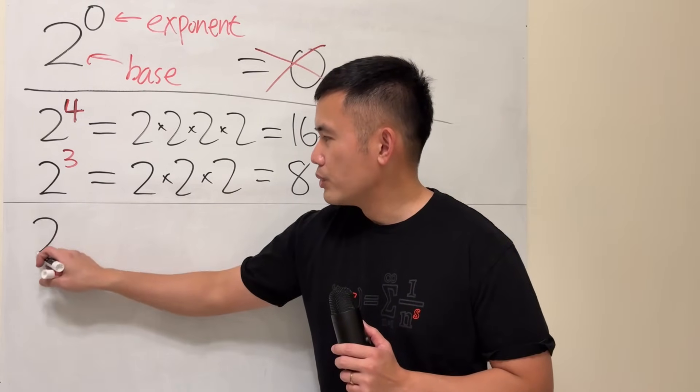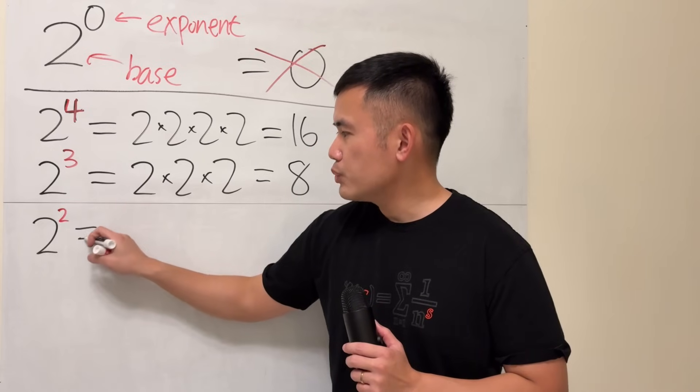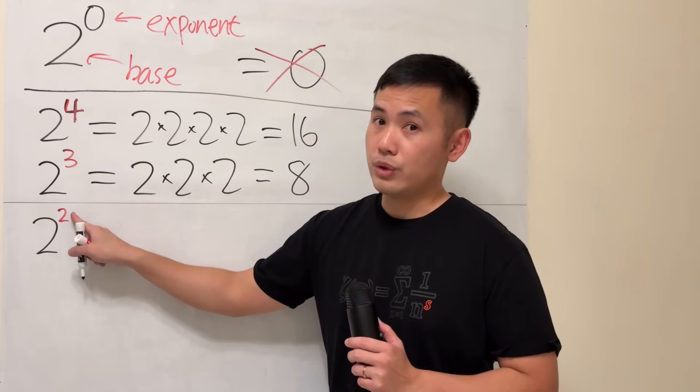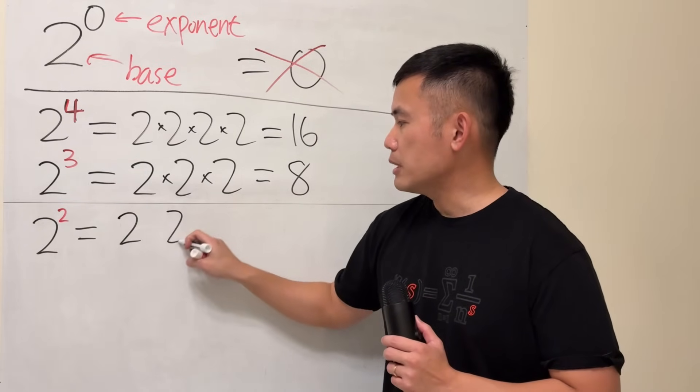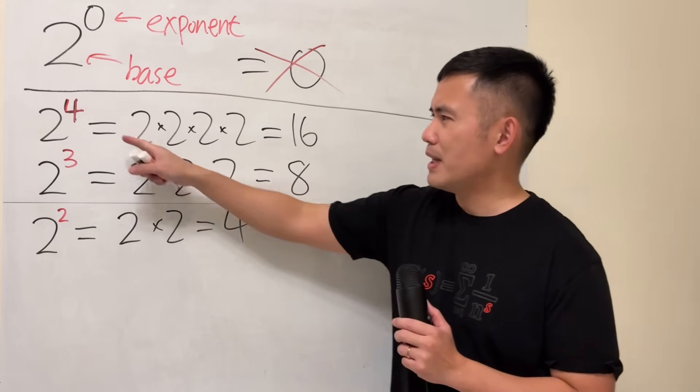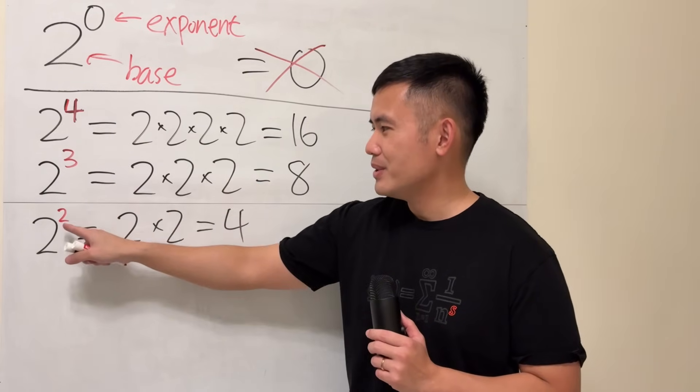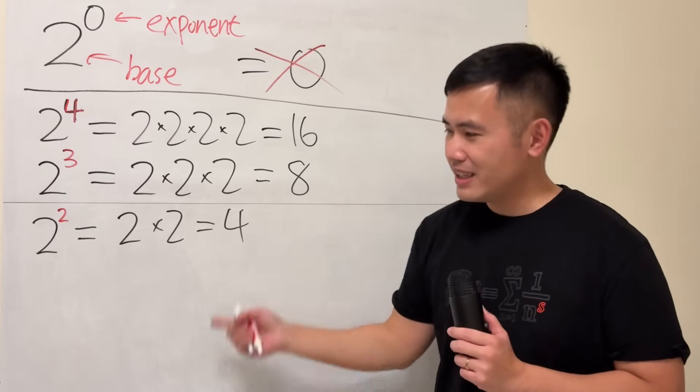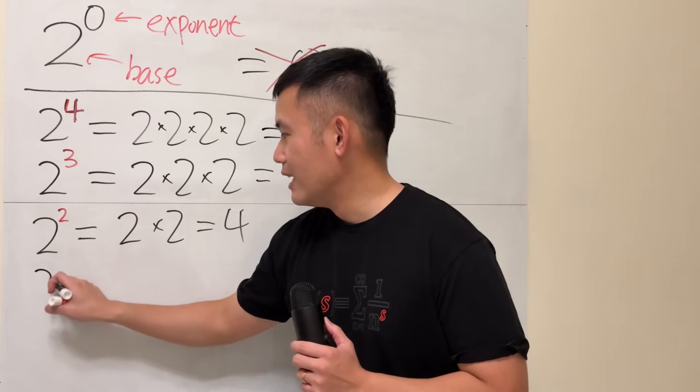Continue. If we do 2 to the second, that means we write down this 2 2 times, and then multiply them. 2 times 2, we get 4. Good. Do you see the pattern? 4, 3, 2, yes, I'm doing this on purpose. The next one is going to be 1.